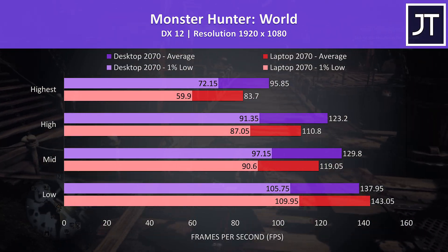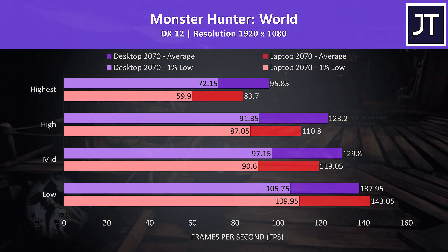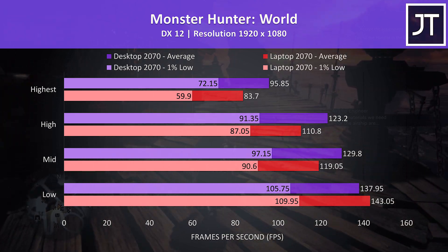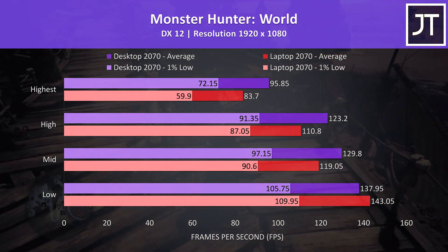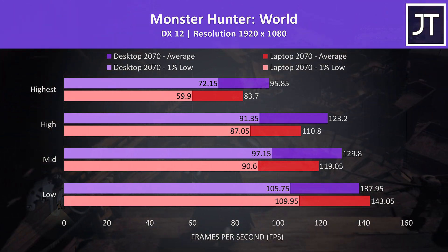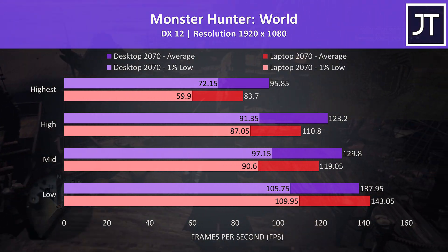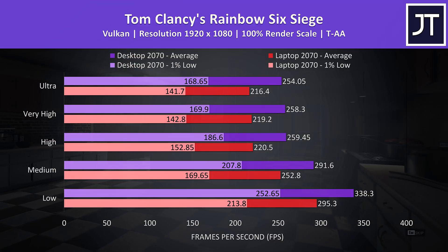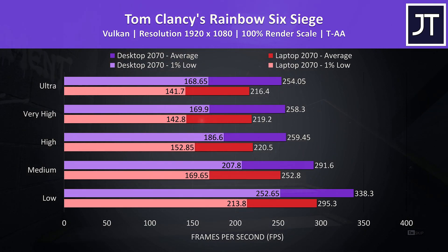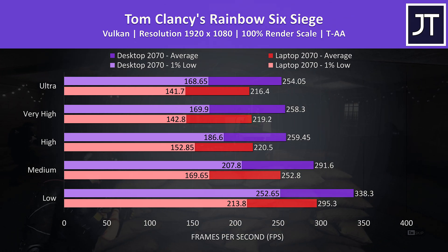Monster Hunter World was tested running through the main town in the same manner on both machines. Like some other games, the two systems were quite close at low settings — with the laptop once more slightly ahead — but at higher levels the desktop pulls out in front, resulting in a 14.5% higher average frame rate at highest settings. Rainbow Six Siege was tested with the game's benchmark using Vulkan, and there was an above-average improvement with the desktop PC, which was 17% higher in average frame rate with the ultra setting preset.